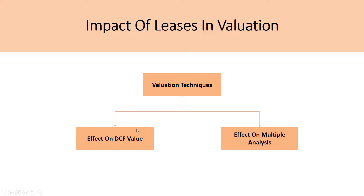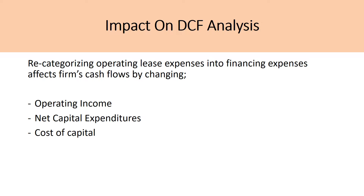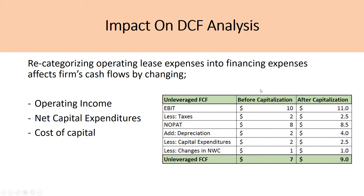Talking about the impact of leases, it has an effect on the DCF value and also on the multiples analysis. Recategorizing operating lease expenses into financing expenses affects the firm's cash flows by changing the operating income, net capital expenditures, and cost of capital. These then impact the free cash flow projected in the model and therefore will impact the DCF value projection. We showed an example in part two where EBIT increases because we add imputed interest, and depreciation increases because we now calculate a depreciation charge on the newly capitalized lease. The increase in capital expenditures due to the free cash flow adjustment therefore increases unlevered free cash flow by $2 and will impact the valuation of your DCF model.